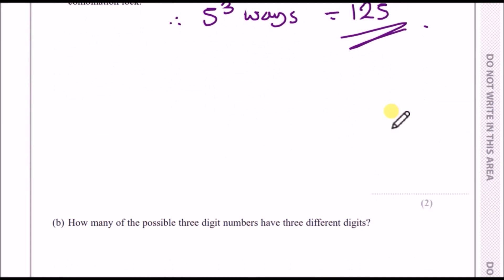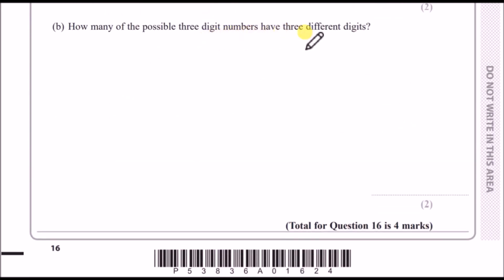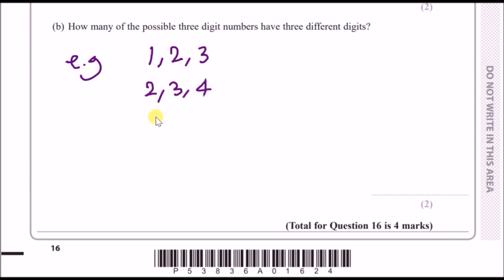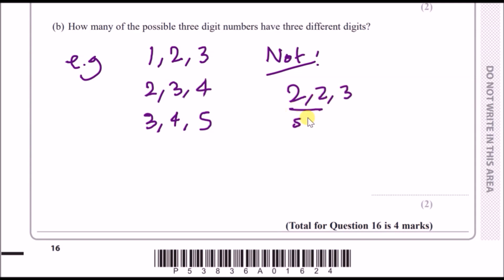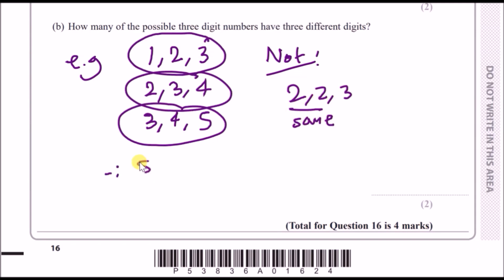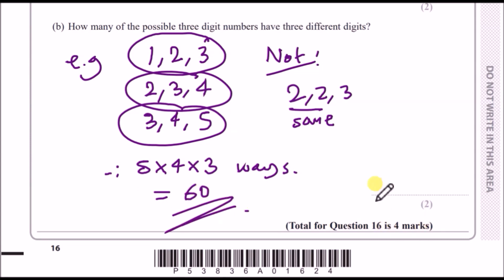For how many three-digit numbers have three different digits — no repeats allowed — the first dial has 5 choices, the second 4, and the third 3. So 5 × 4 × 3 = 60 combinations.